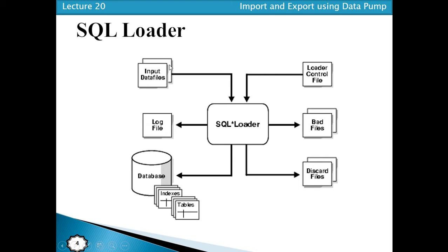Input data files are the files that contain the data. The data file may be in comma-separated value format, in TXT file format, or in other file formats such as CSV, TXT, DAT, or any other format. So the source files that are available in TXT, CSV, or any other file format are what we call input data files.